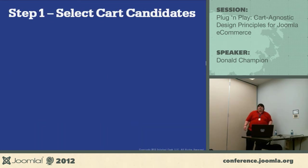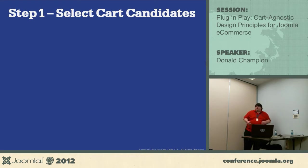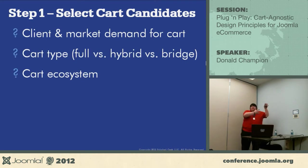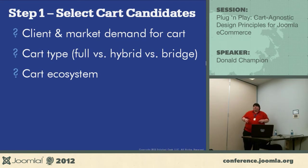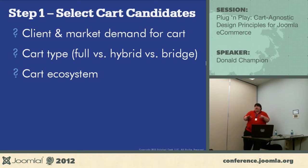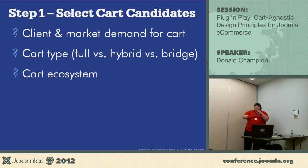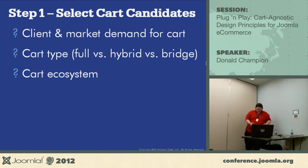Select your cart candidates. There are 12 to 14 different carts depending on maintenance status. How do you narrow down? You might have a client come to you and say they need this on a specific cart — that's a client project. Market demand: if you do a commenting system and you've got 30 people asking for it on one cart, five on another, and two on another, that market demand dictates which carts you put the effort into.